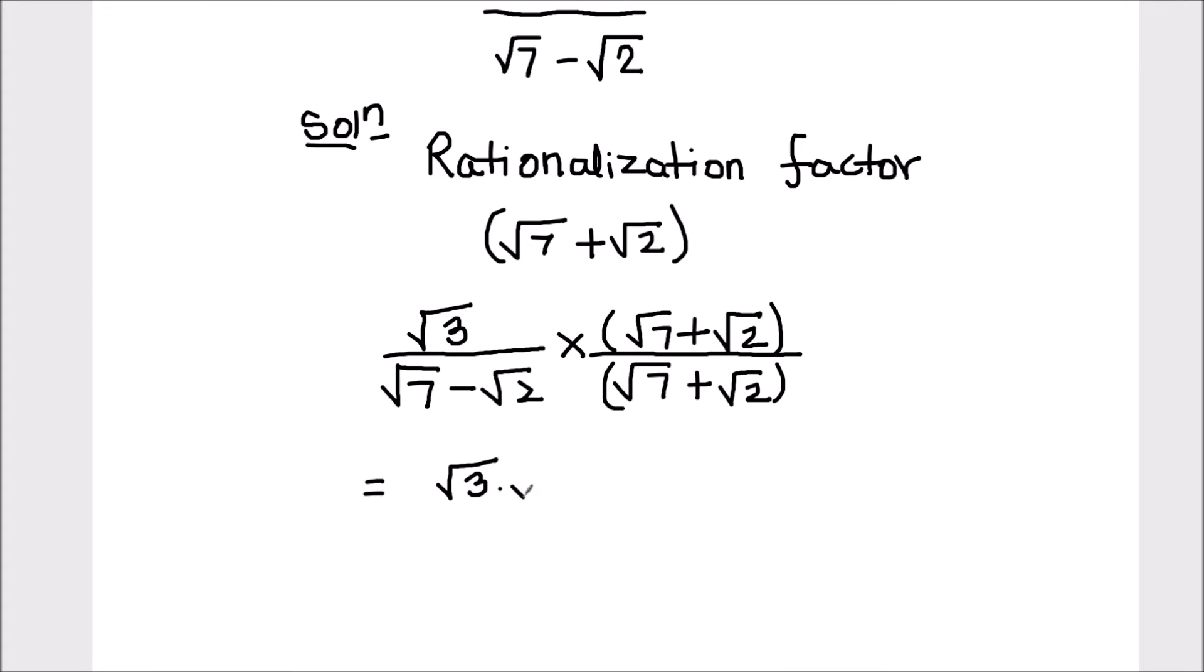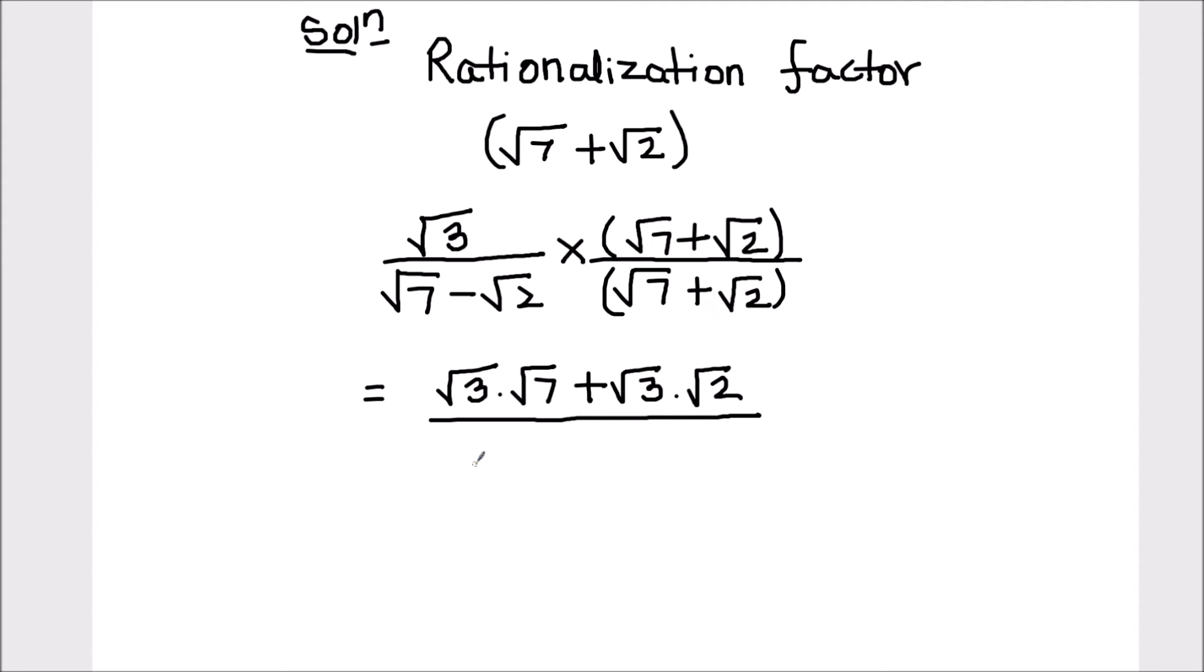So this will be root 3 times root 7 plus root 3 times root 2 divided by. For the denominator we can directly use the formula a minus b times a plus b equals a square which is root 7 square minus b square which is root 2 square.